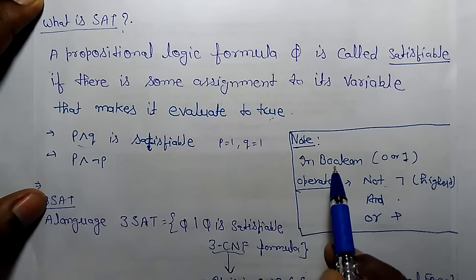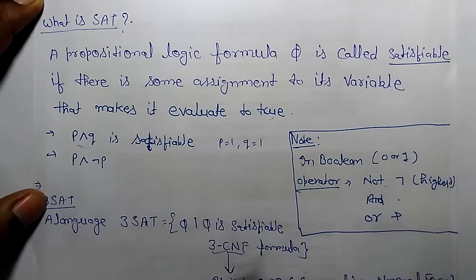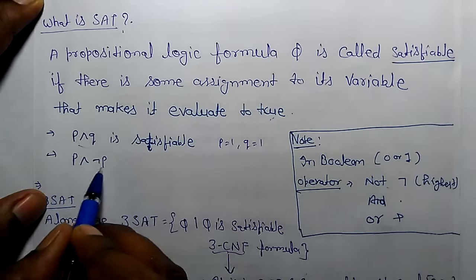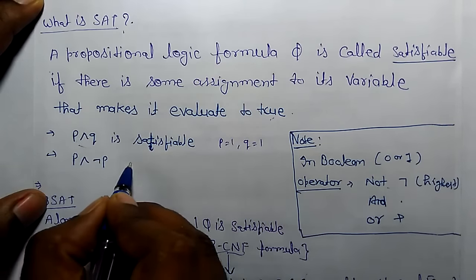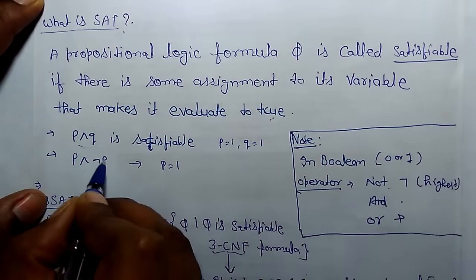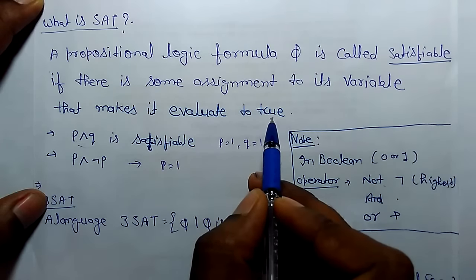Let's understand Boolean logic. Boolean represents 0 or 1: 0 for false, 1 for true. The operators are NOT, AND, and OR. NOT has the highest precedence, AND second, then OR. For example, P and NOT P—is it satisfiable? No, it is not satisfiable. Even if P equals 1, it will become false, while satisfiability requires evaluating to true.